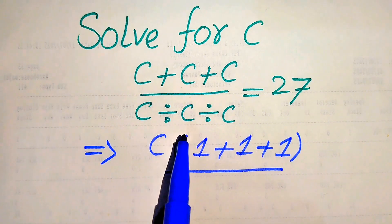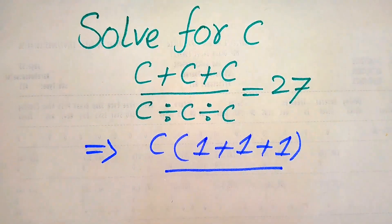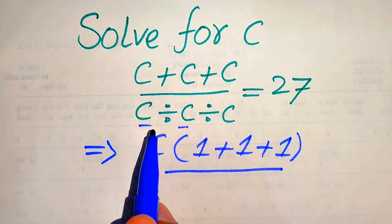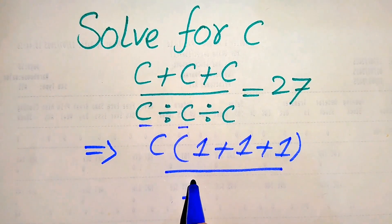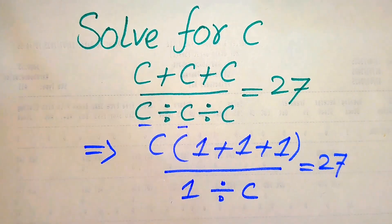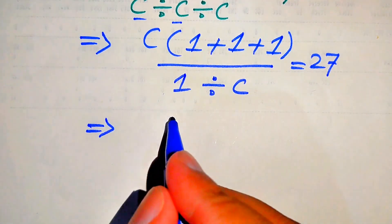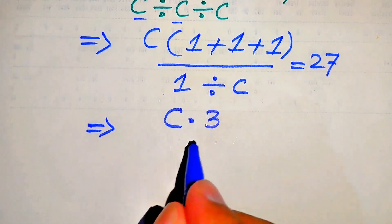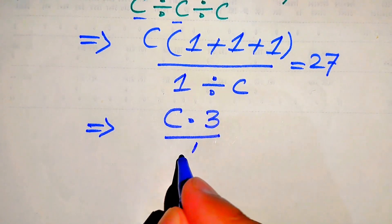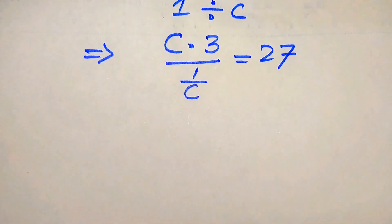If we have multiple division signs in a number, we divide these numbers from left to right. So here first we divide C by C, and when we divide C by C we get 1, and it is divided by C equals 27. Now in the numerator term we have C times of 1 plus 1 plus 1, which becomes 3, and it is divided by 1 divided by C, which equals 1 over C, and this equals 27.